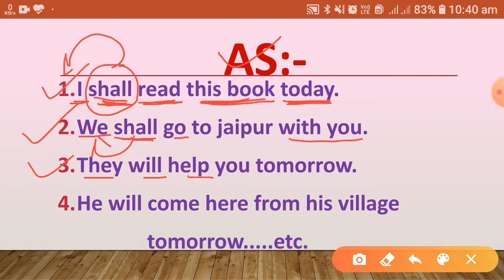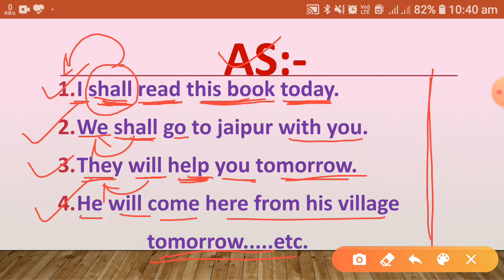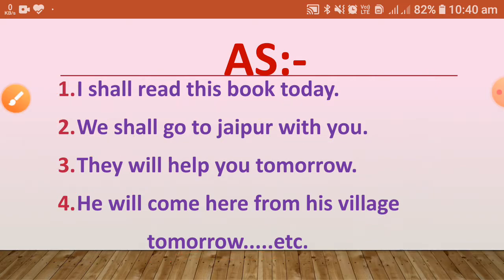Next example: 'They will help you tomorrow.' Here 'they' is the subject, 'will' is the helping verb, 'help' is the first form, and 'you tomorrow' are other words. Next: 'He will come here from his village tomorrow.' 'He' is the subject, 'will' is the helping verb, 'come' is the first form. These are all affirmative sentences using the affirmative structure.